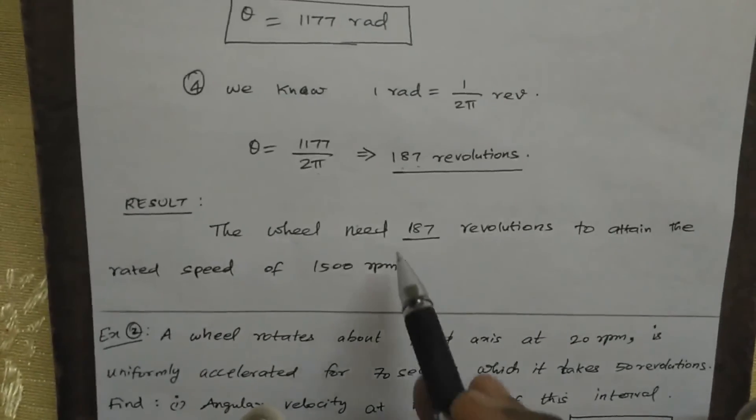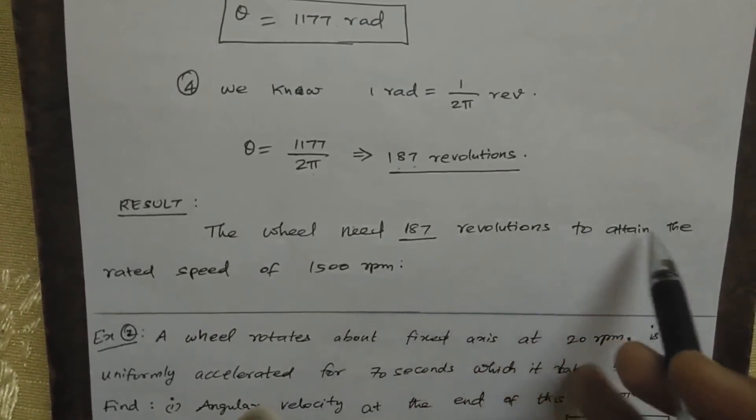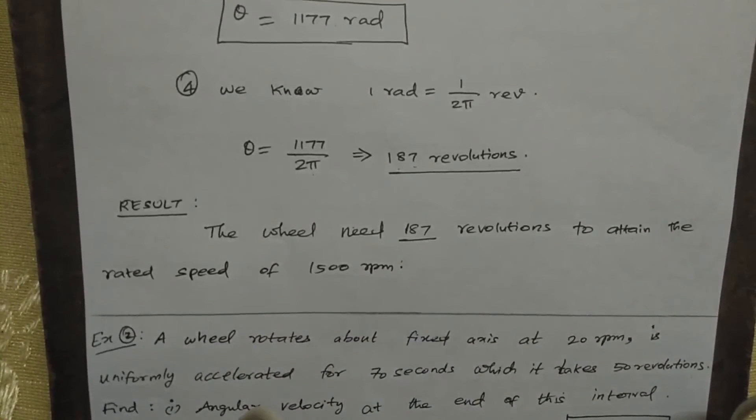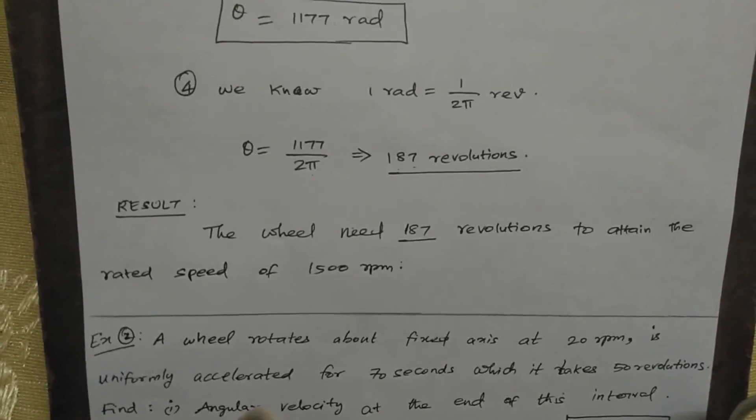The result is the wheel needs 187 revolutions to attain the rated speed of 1500 RPM. That is concluded. We are going with the next problem. That is the end of the module. Thank you.